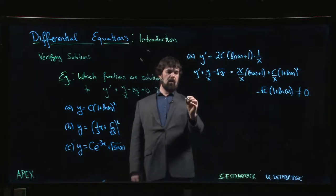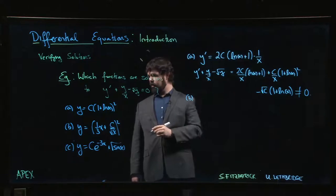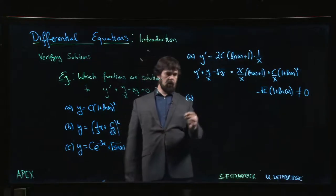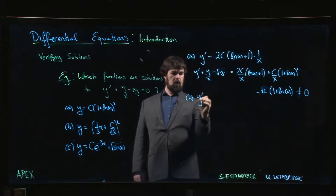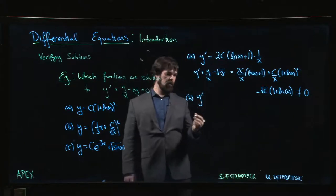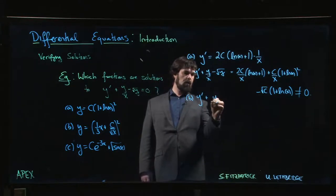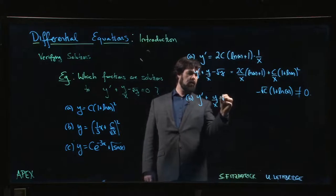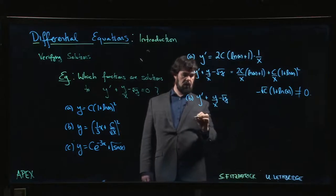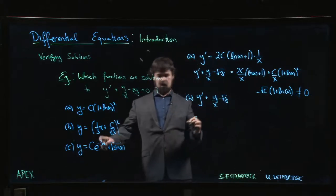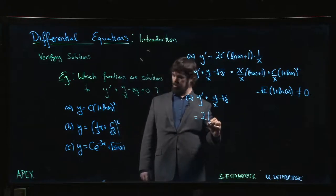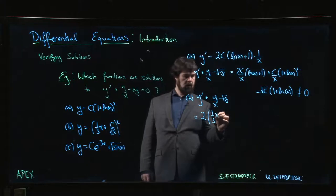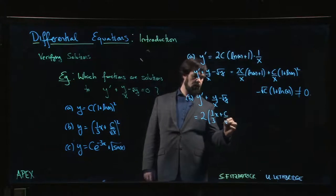Seems like it's not going to work, so we try the next one. For the next one, we say what's y prime - let's just do it all at once. y prime, y over x minus root y. We get, so the derivative is going to be 2 times 1 over (3x plus C over root x).